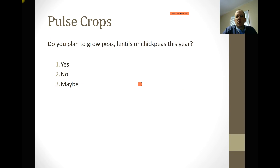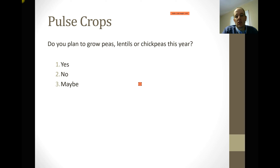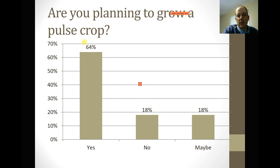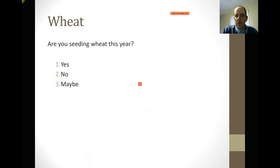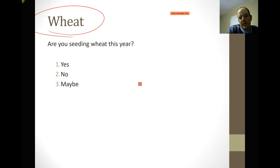One of the questions we ask at our live grower meetings is what you plan on growing for the following crop year. The first question: do you plan to grow peas, lentils, or chickpeas? This is one of the biggest shifts in production in our area that we've had in a long time. Basically five years ago this answer may have been 10%. Now at our grower meeting, 64% of the producers are going to try some sort of pulse crop this year — a major shift from just wheat and barley, now throwing pulses in our rotations, mostly driven by low wheat and barley prices plus the fact that these rotations work.